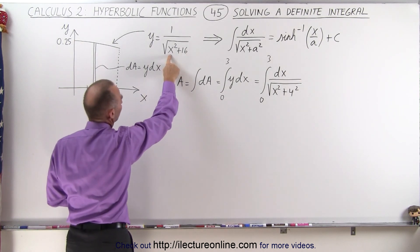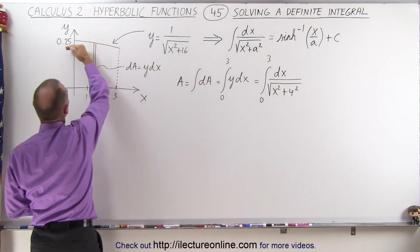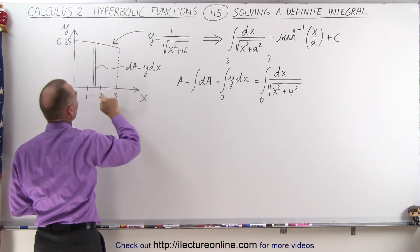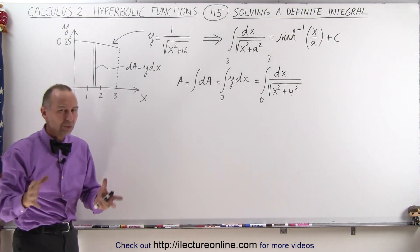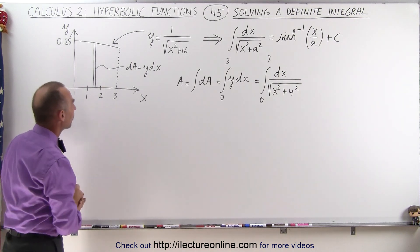When x is equal to 3, 3 squared is 9. 9 plus 16 is 25. The square root of 25, well that's 5, that's 1 fifth. That means the height of this curve would be 0.2 for x equals 3. So it looks like our curve looks just like it's supposed to.